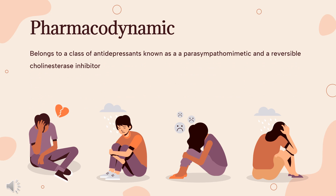Rivastigmine is a parasympathomimetic and a reversible cholinesterase inhibitor. An early pathophysiological feature of Alzheimer's disease associated with memory loss and cognitive deficits is a deficiency of acetylcholine, resulting from selective loss of cholinergic neurons in the cerebral cortex, nucleus basalis, and hippocampus. It is postulated to exert its therapeutic effect by enhancing cholinergic function through reversible inhibition of acetylcholine hydrolysis by cholinesterase. Rivastigmine's effect may lessen as the disease progresses and fewer cholinergic neurons remain functionally intact.